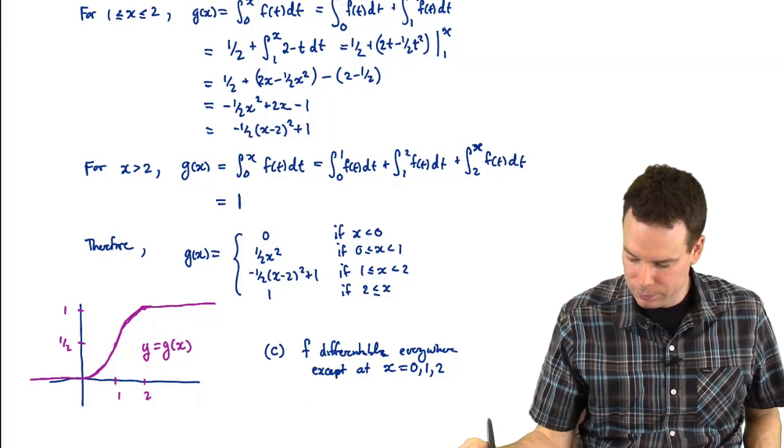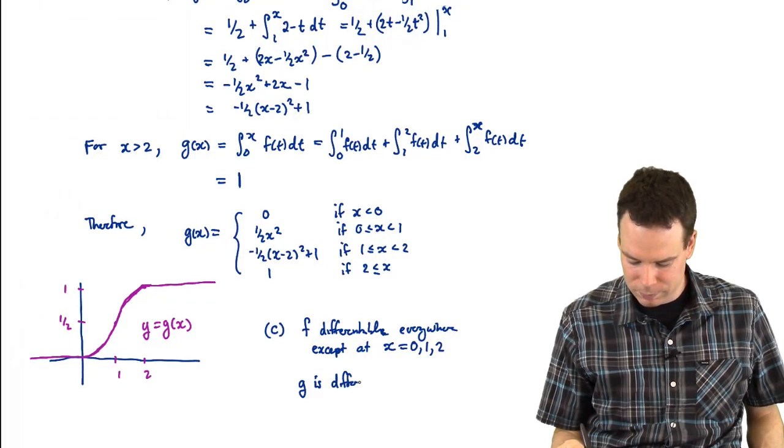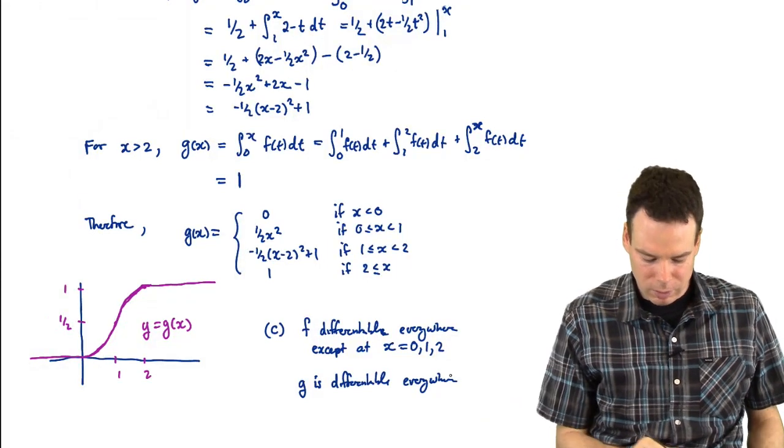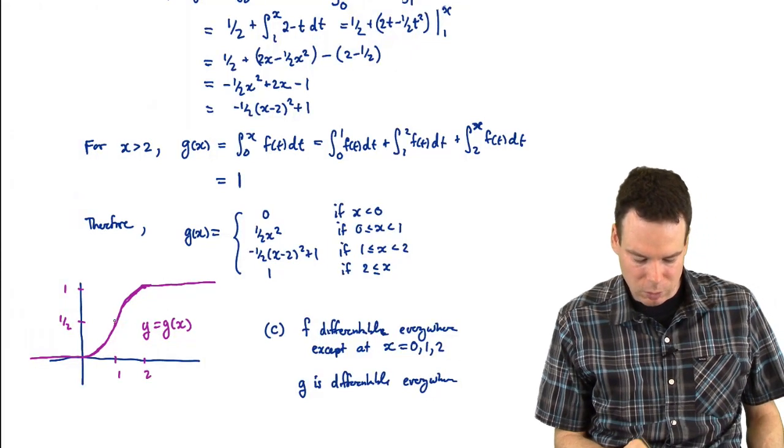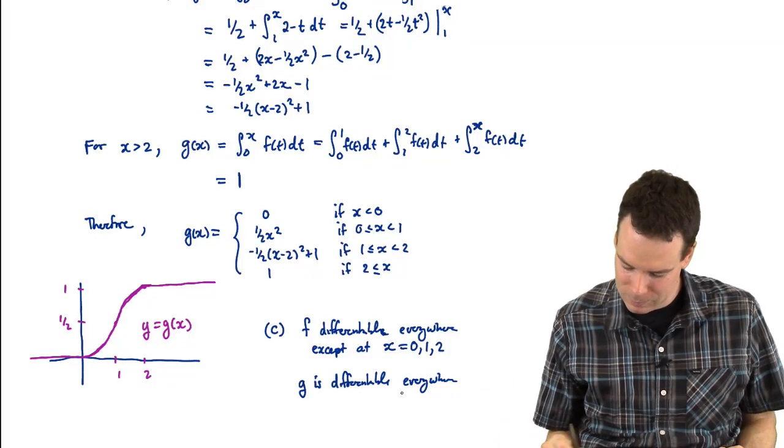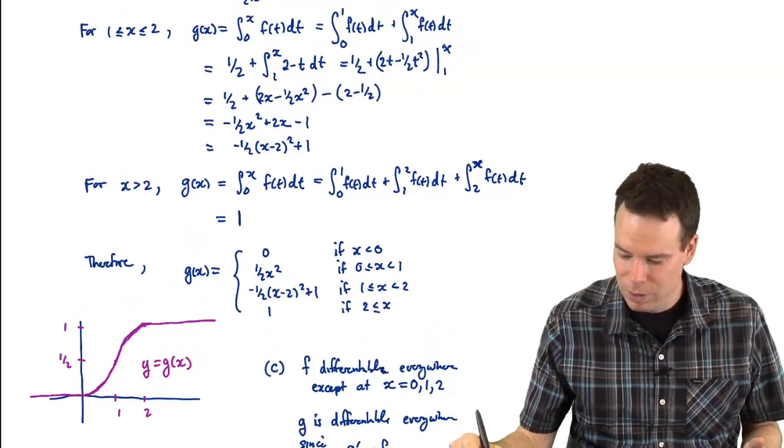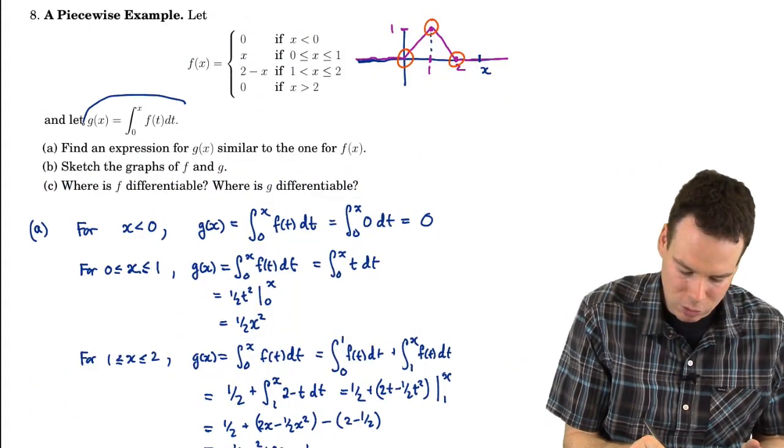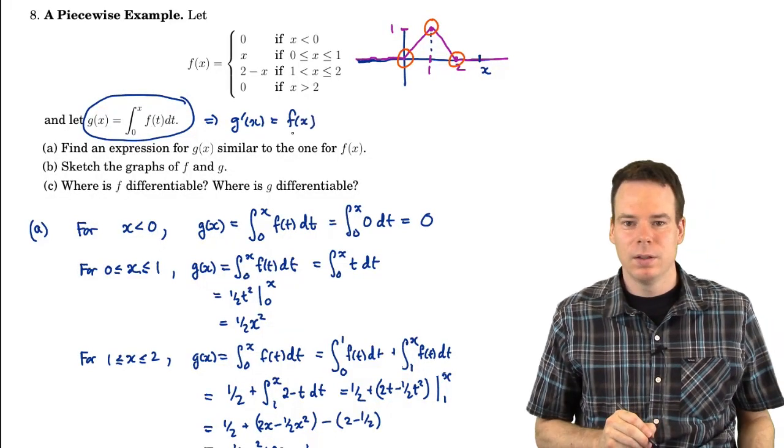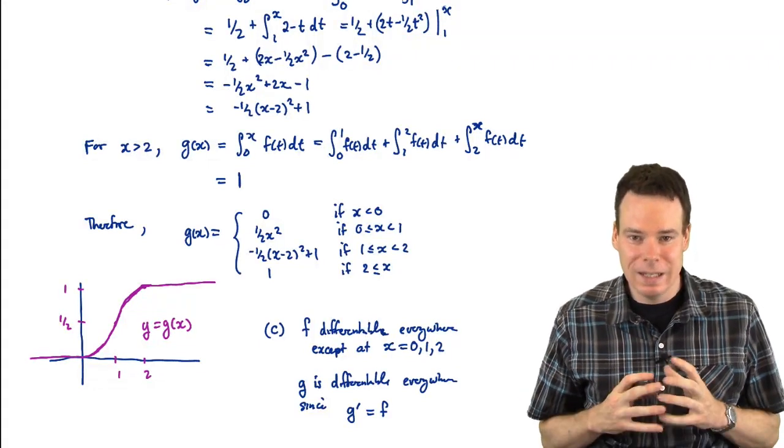Where is g differentiable? Are there any places where g isn't differentiable? Well, g is differentiable everywhere. Why is it differentiable everywhere? It looks like a nice smooth graph. How do I know there's not some corners here where I've joined these things up? Well, it's differentiable everywhere because, what's its derivative? What's the derivative of g? The derivative of g is just f. That's the fundamental theorem of calculus part 1. It says if I construct this function g in this way, then its derivative is just the function f. So g is differentiable everywhere because its derivative is just f. We've constructed the function g so it is differentiable everywhere.